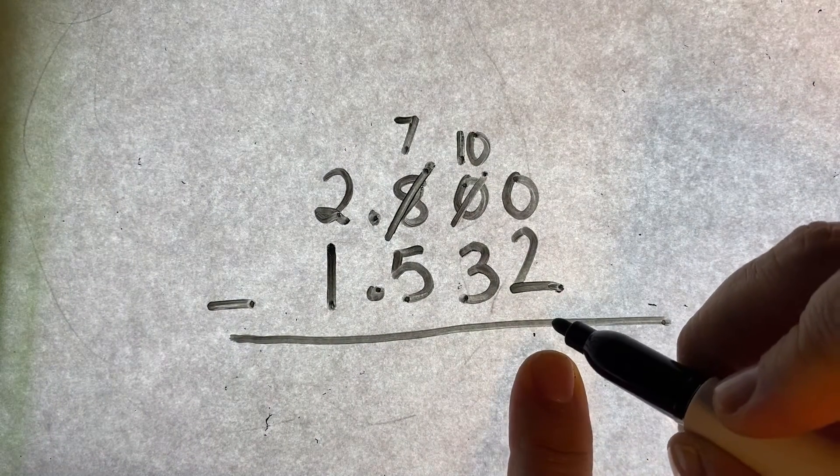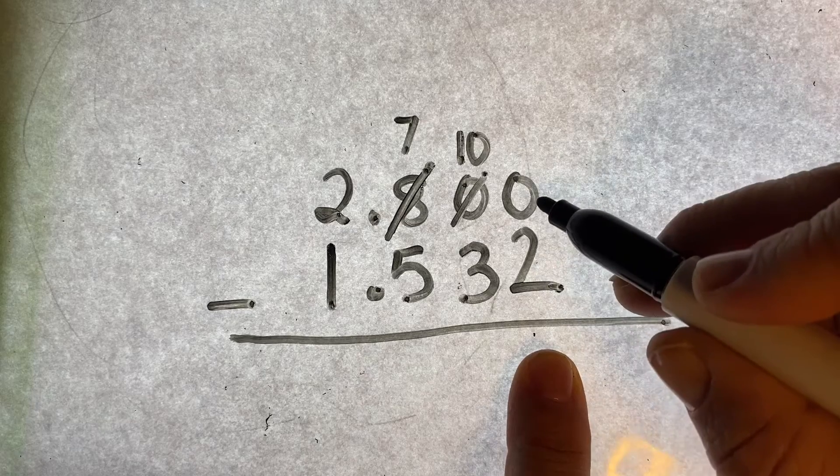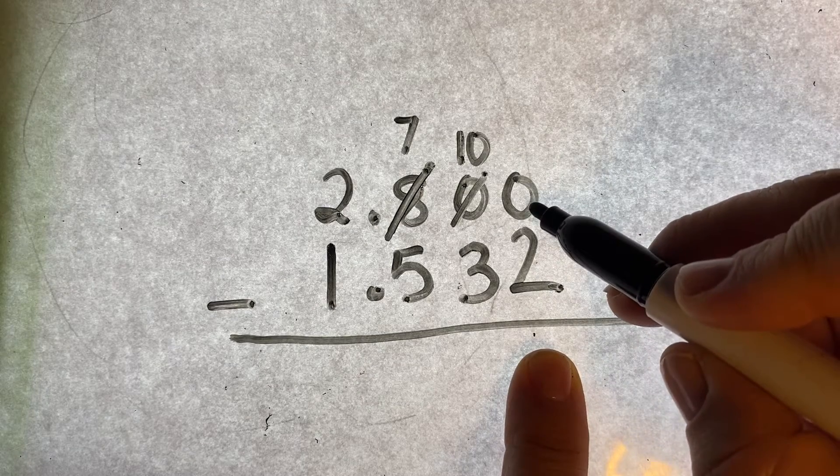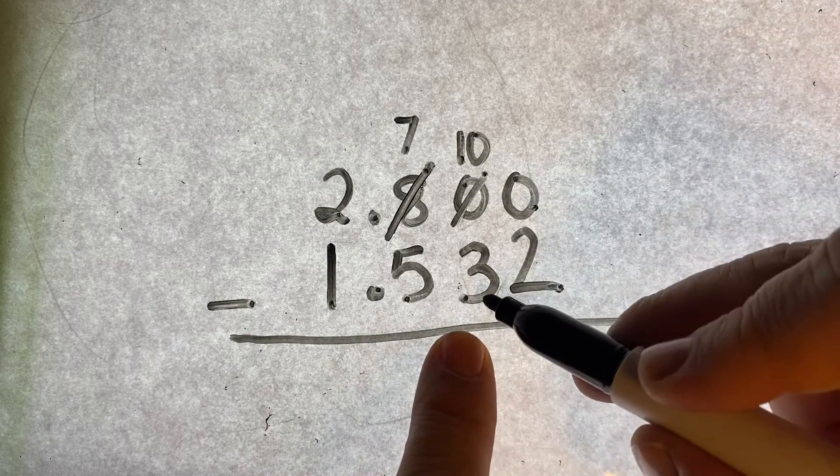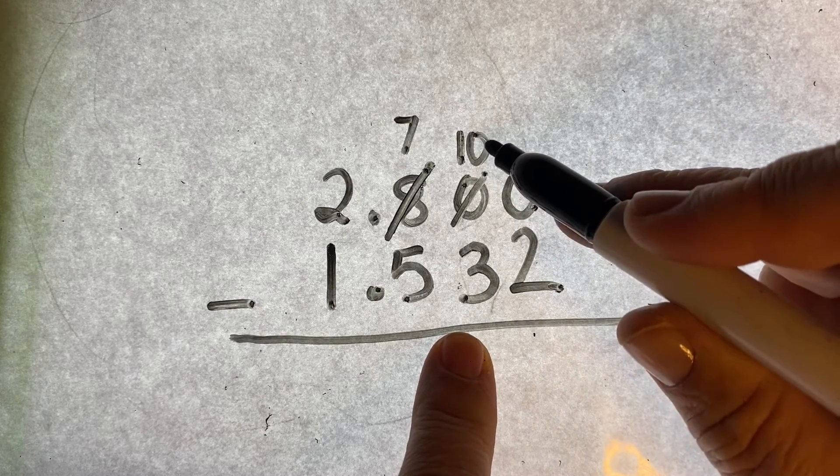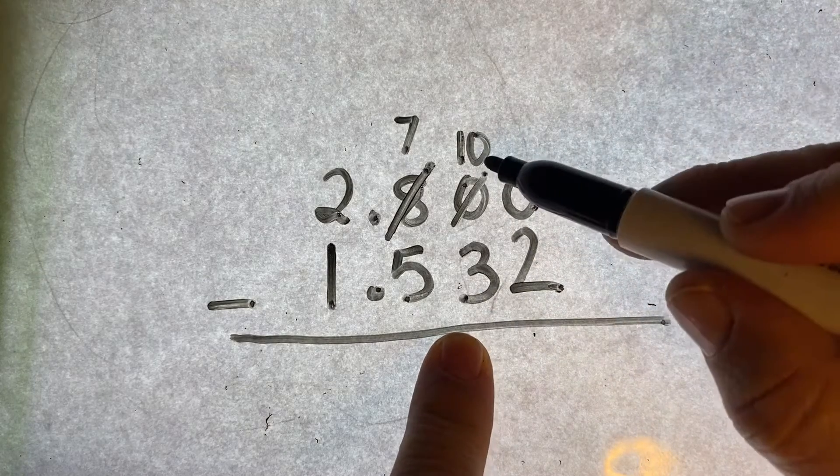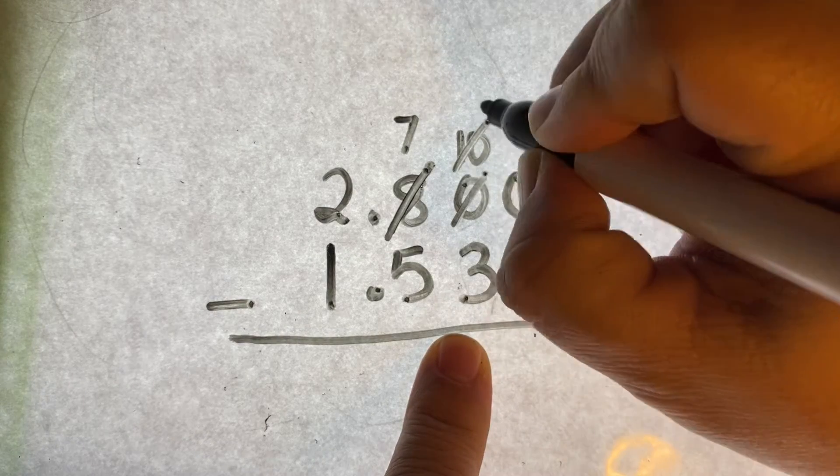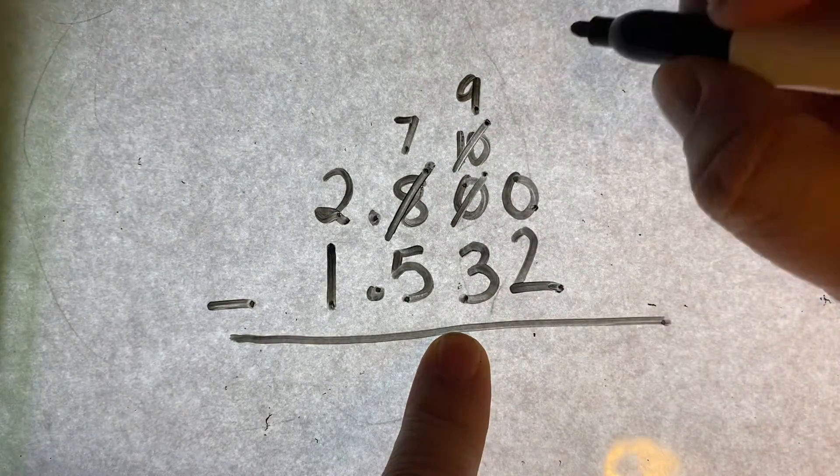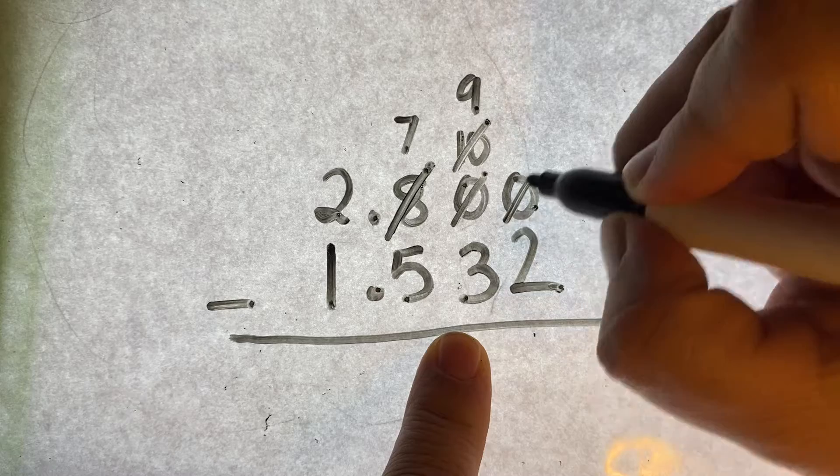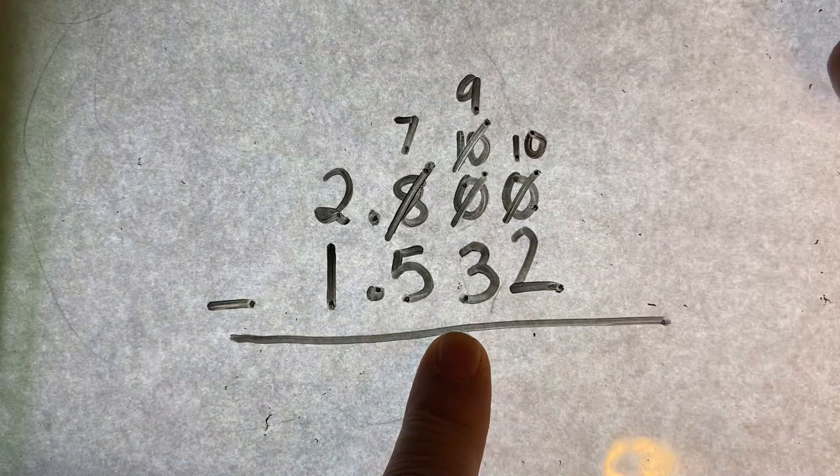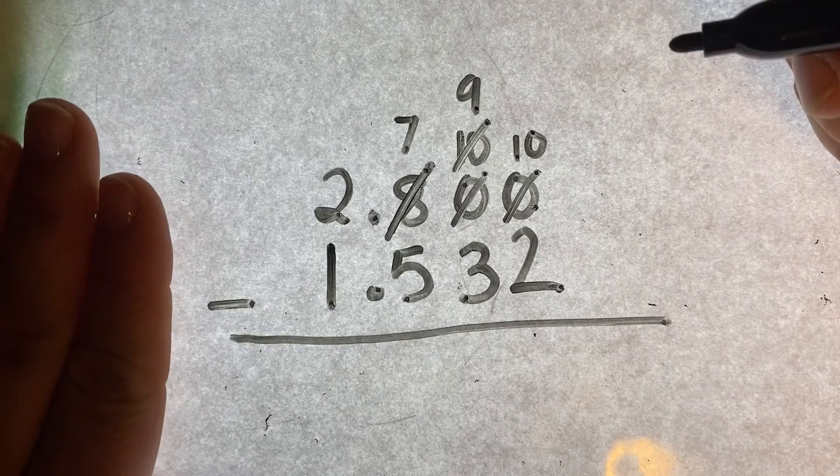Now I go back to here. Okay, can I do it yet? No I cannot, because I still have a zero here. Let's go here. Can I borrow from here now? Yes I can, because I have a ten. So now my ten becomes a nine. I can make this zero a ten. Now I shouldn't have to do anything else.